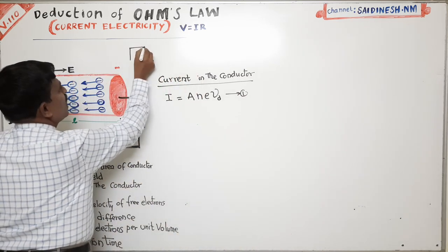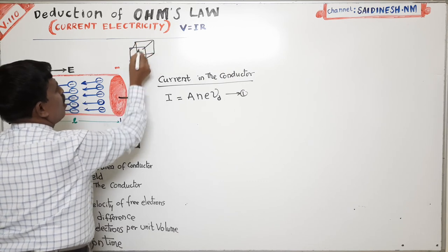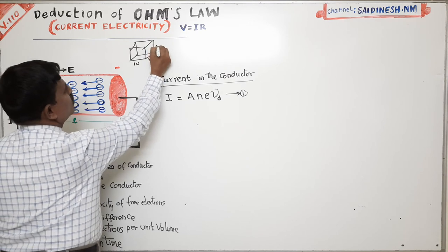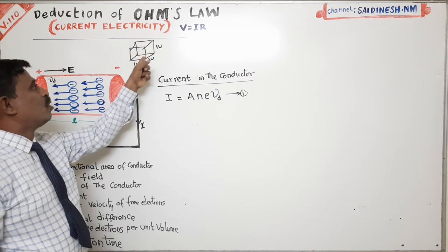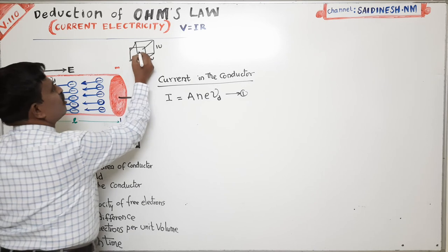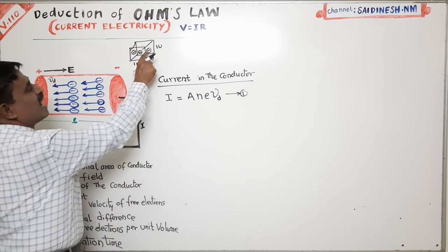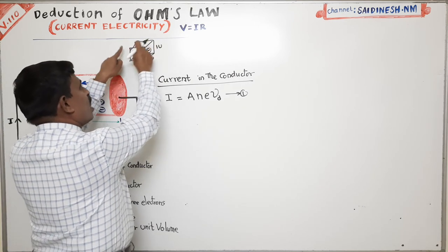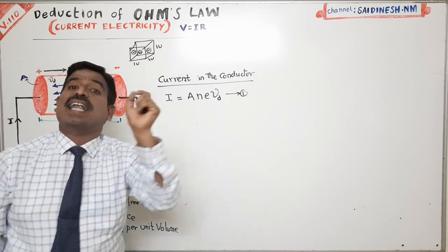Number density of free electrons means the number of electrons present in a unit volume. Consider a cube where length, breadth, and height are each one unit — we call this a unit cube with unit volume. The number of electrons present in this unit volume of the conductor we call the number density.